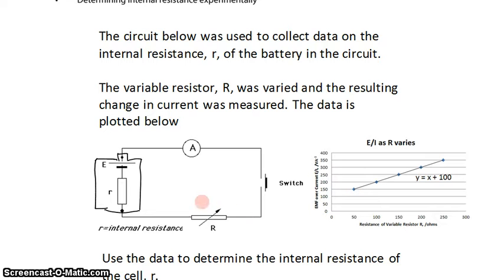A variable resistor, capital R, was varied, and the resulting change in current was measured. The data is plotted here. So we changed the value of the variable resistor, capital R, and as a result, we measured different currents.